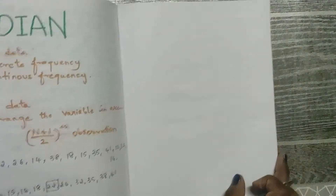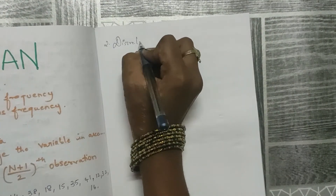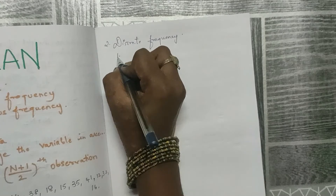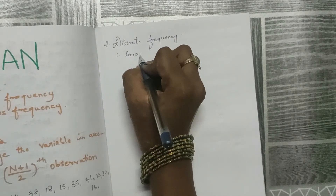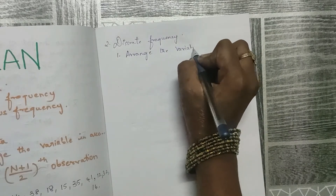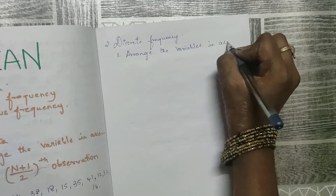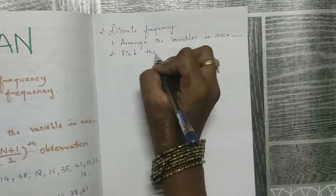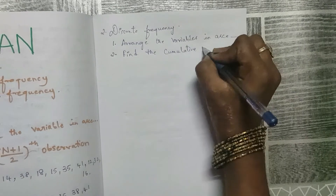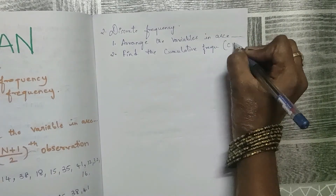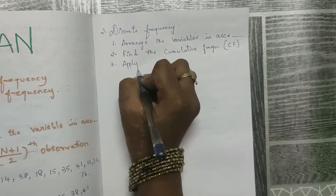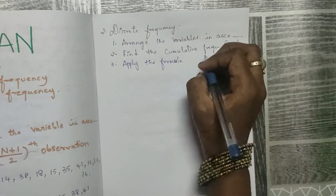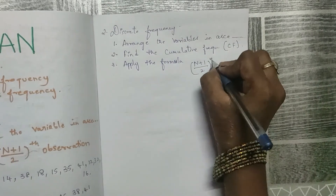Now let's move on to discrete frequency. In discrete frequency, there are two rules: first, arrange the variables in ascending order; second, find the cumulative frequency (CF). Third, apply the formula, which is the same — (n+1)/2 th observation.